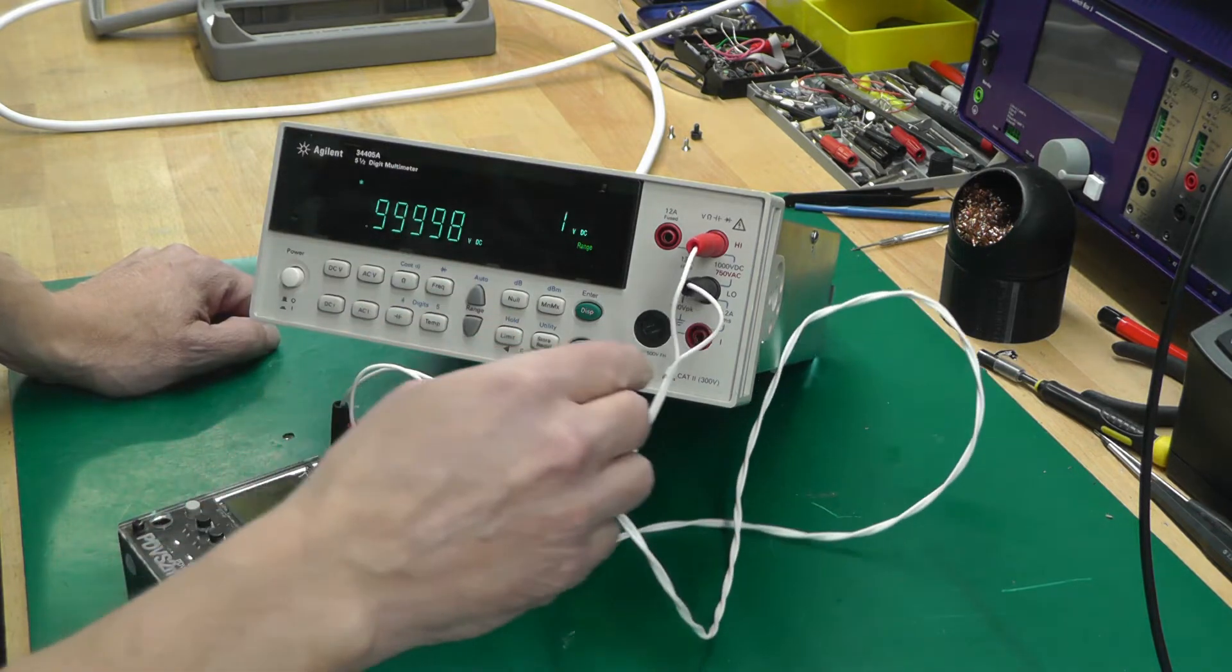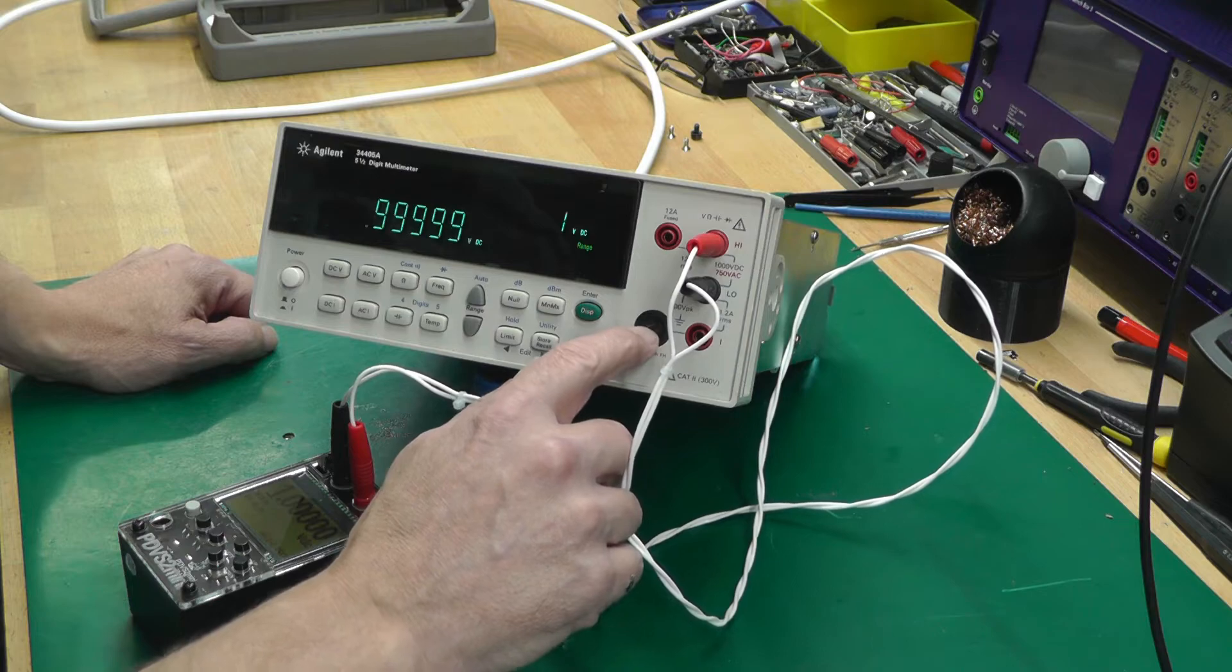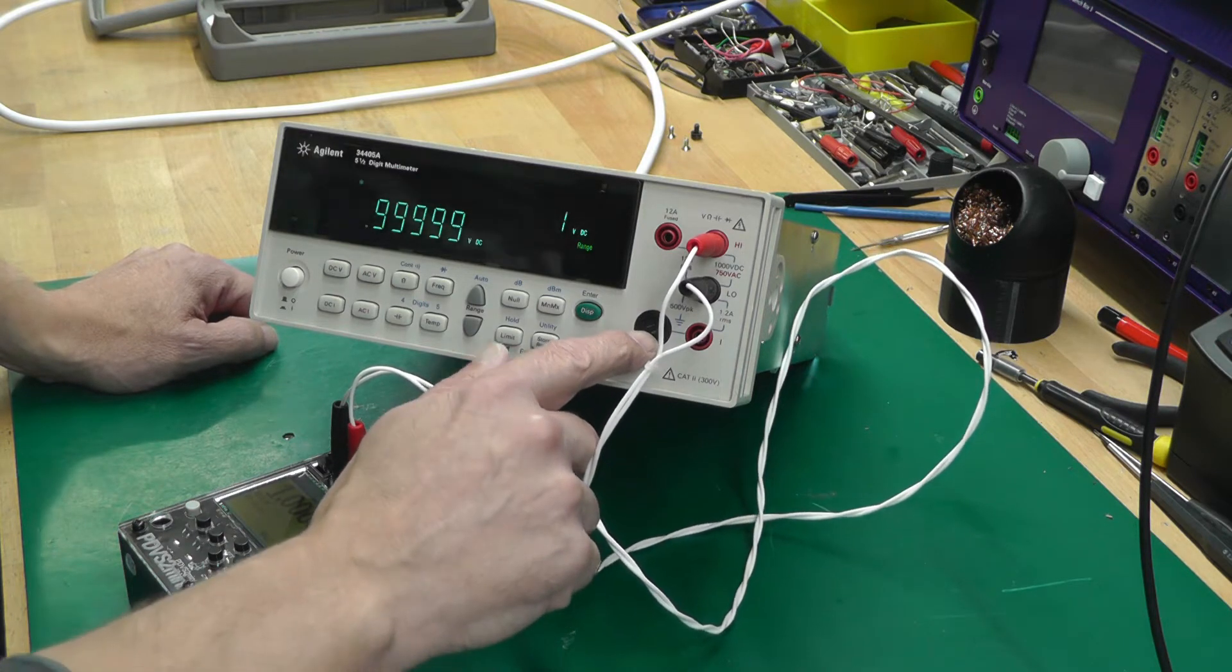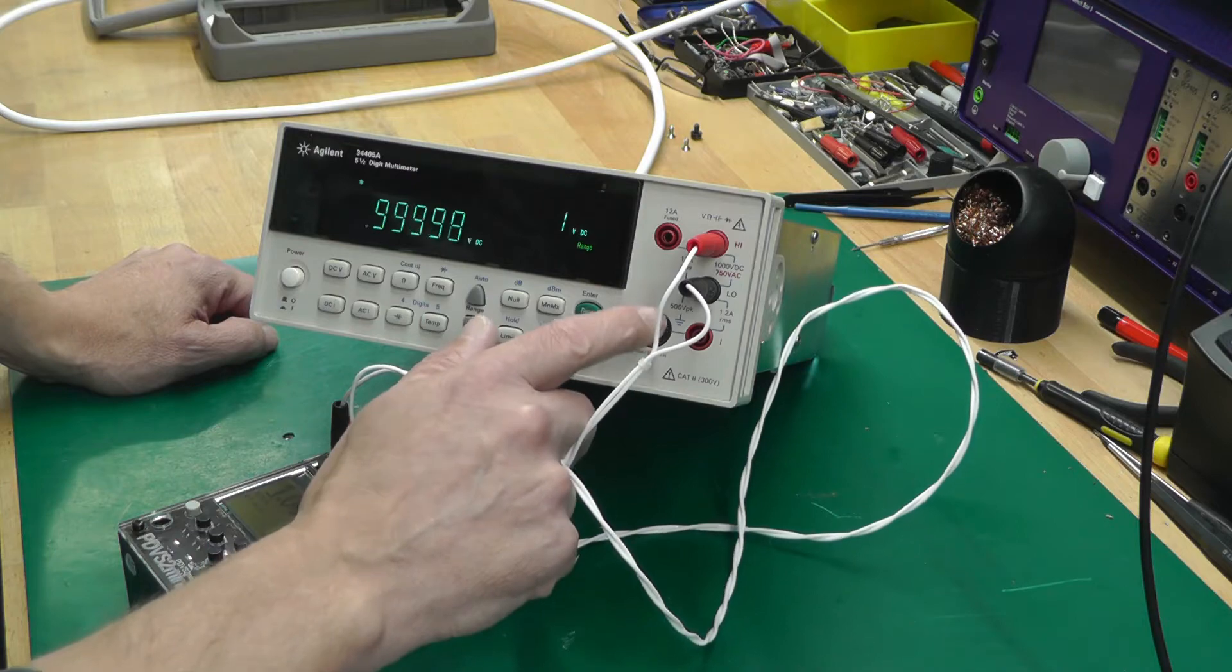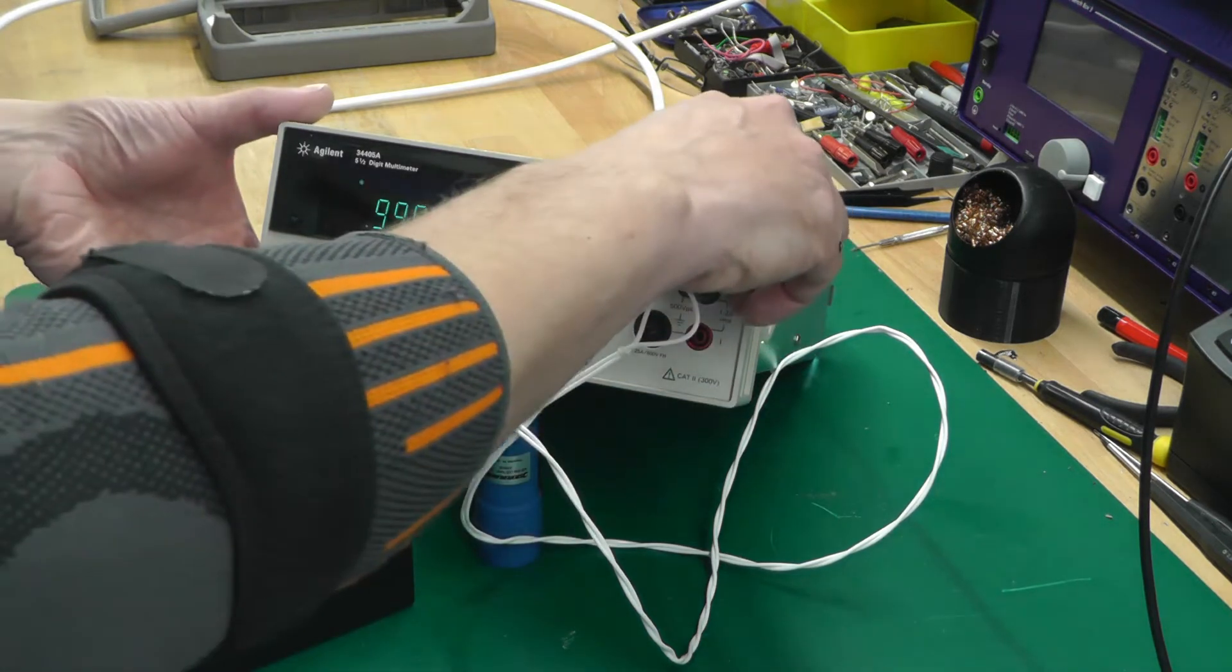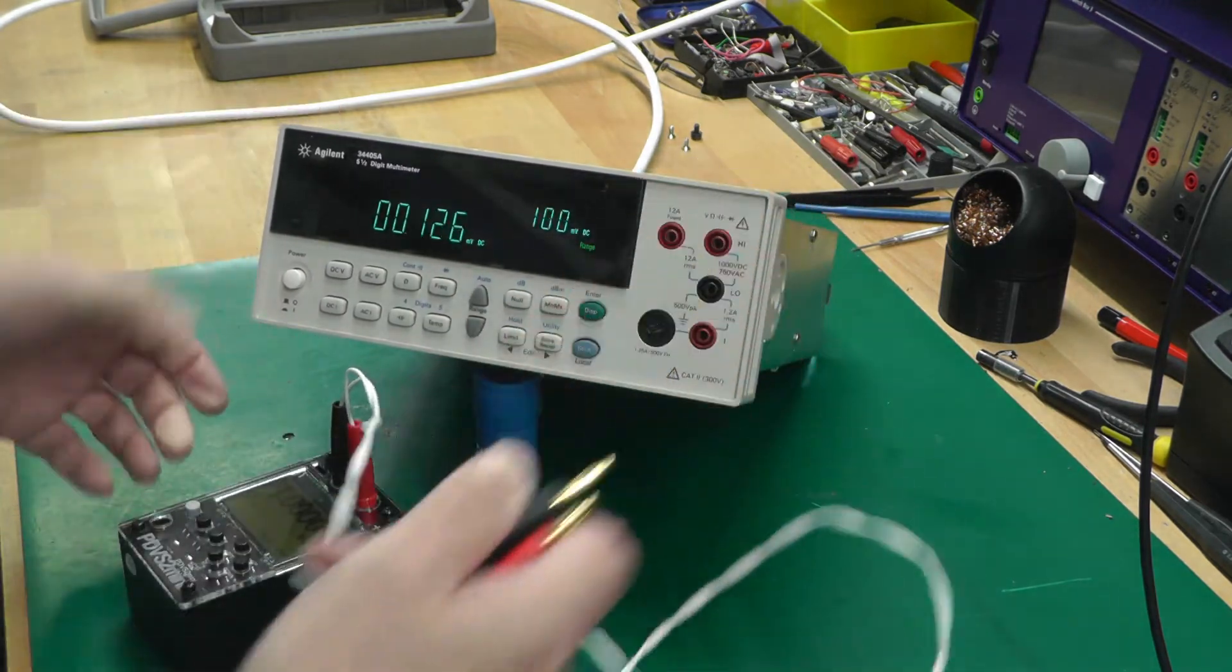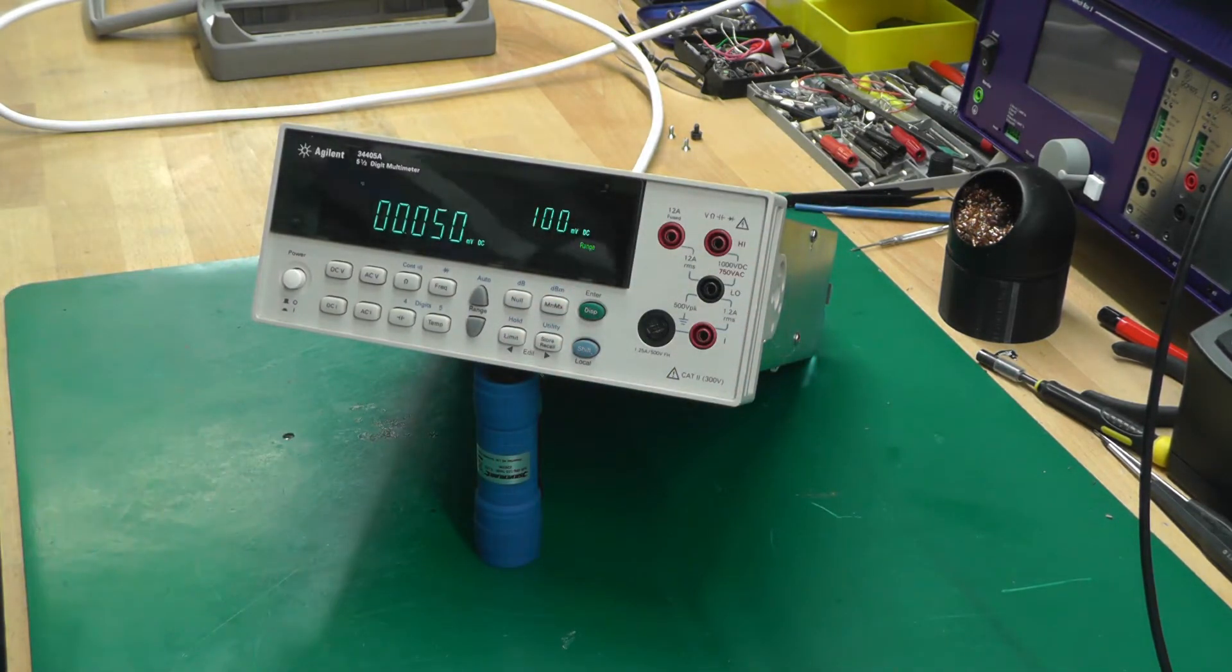The fuse on the input here for the current input is a bit chewed up there, so it looks like somebody's been in and out there on the current range. I wonder if that's a problem. I think the next thing to do is - I'll get this unplugged of course. Stability is another thing, but let's just check and see if it's all working first of all.